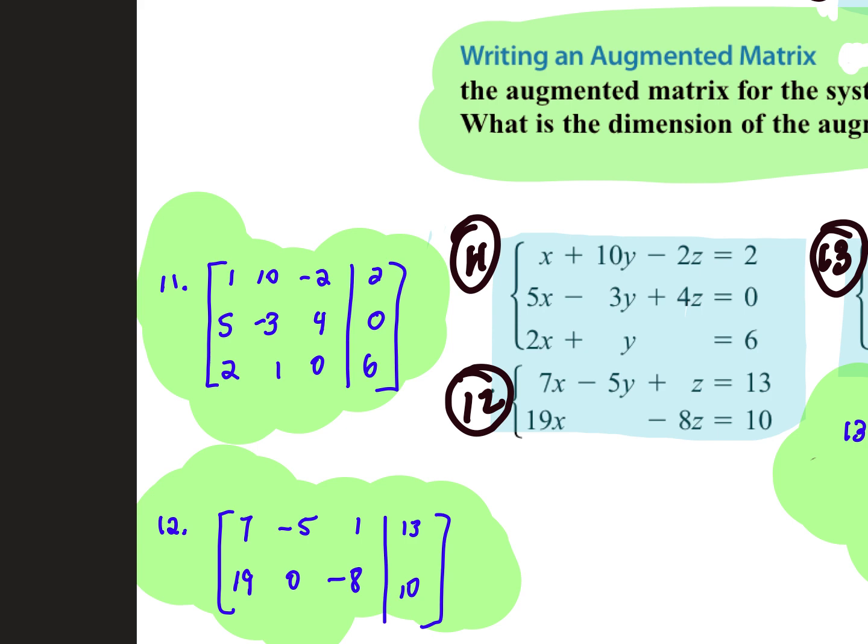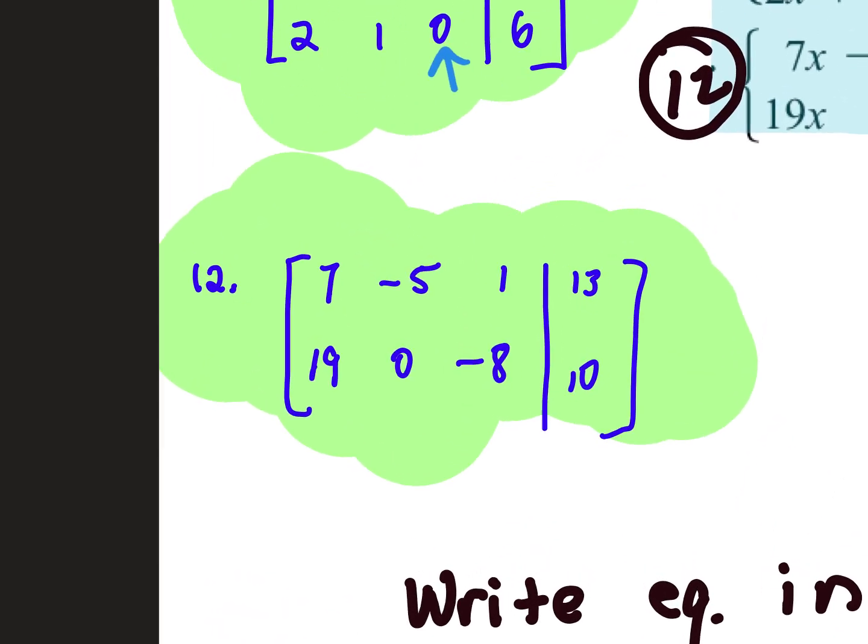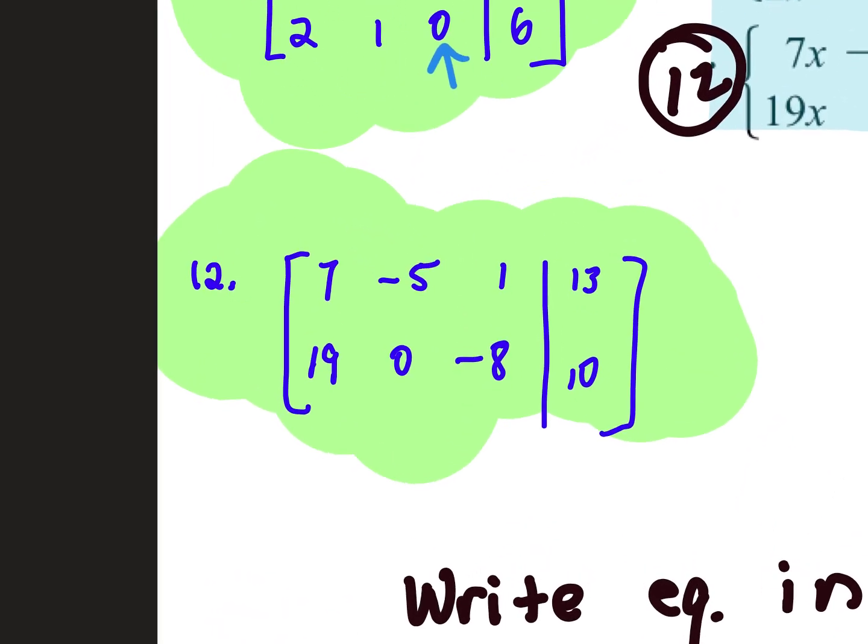...write the augmented matrix, understand that augmented matrix, augmented means coefficients and the answers. When you write it, if you want to separate the answers and the coefficients by a solid line, that's fine. If you want to use those two little dots in between, that's fine as well. If there is nothing represented, like right here, there's no Z value, that's why we put a zero there. So then if they asked you to write the system given the augmented matrix, remember the first column is your X, your Y, your Z. If there is a fourth column without the answers, that would be W, and then here are your answers.